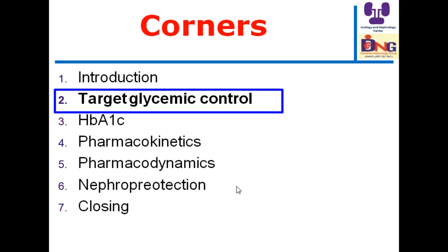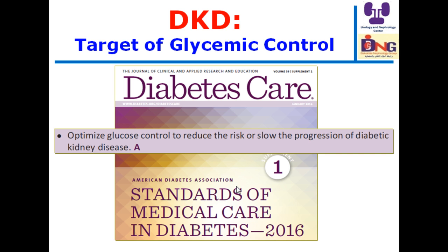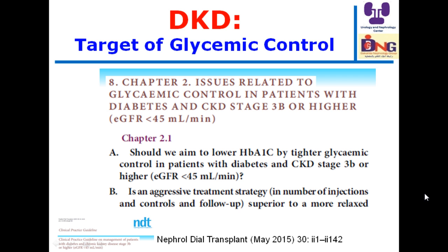What is our target in managing these patients? According to the standards of medical care this year, we should seek to optimize glucose control to reduce the risk or slow the progression of diabetic kidney disease. From the clinical practice guideline published in May 2015, two key questions arise: Should we aim to lower hemoglobin A1C by tighter glycemic control in patients with diabetes and CKD stage 3B or higher? Is an aggressive treatment strategy — oral drugs, injections, or intensive follow-up — superior to a more relaxed approach?